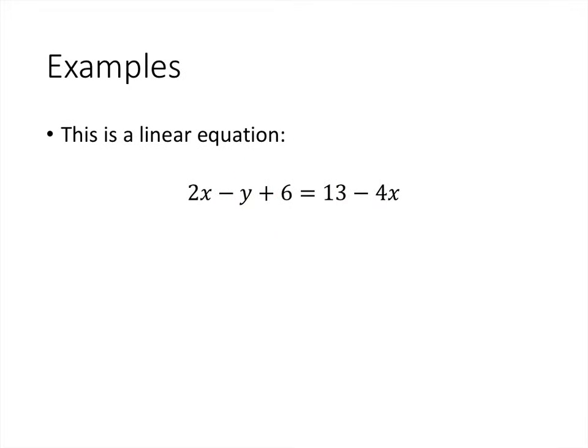This is also a linear equation, although it's not in the standard form, but it can be put into that standard form. We can do that by adding 4x to both sides and subtracting 6 from both sides. When we do that, we get 6x minus y equals 7. If we wanted to write this in the notation with subscripts, we could write this as 6x1 minus x2 equals 7, so our coefficient a1 would be 6, and our coefficient a2 would be negative 1.